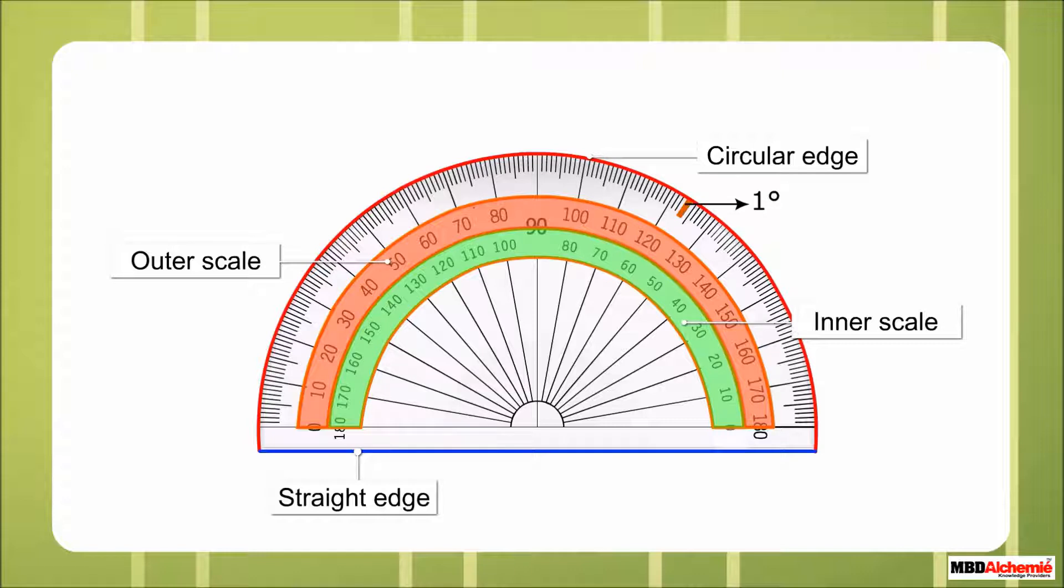The line segment joining 0 and 180 is called the baseline, bottom line of the protractor. The midpoint of the baseline is called the center of the protractor.